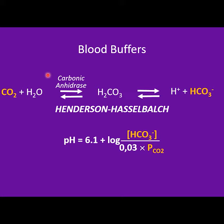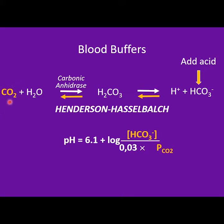For the carbon dioxide-bicarbonate buffer, the pKa of the buffer is 6.1. The concentration of the base is the concentration of bicarbonate, and the concentration of the acid is the concentration of carbon dioxide. Since carbon dioxide is a gas, what we measure in blood is the pressure of carbon dioxide, converted using a solubility constant. If we add an acid to the solution, the reaction will shift to form more carbon dioxide, lowering the concentration of bicarbonate and raising the pressure of carbon dioxide.